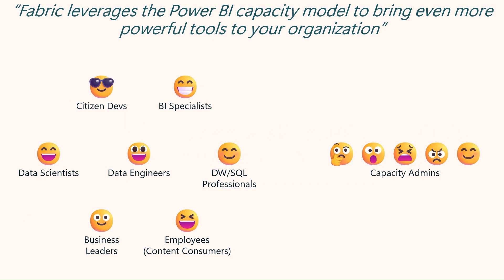Fabric is built upon the capacity model that came along with Power BI, so capacity admins familiar with that will find this nothing new. However, with Fabric there's a whole lot more things that people can do. While this makes a lot of people in the organization very happy — leveraging their existing Power BI, now Fabric capacity — capacity admins can have mixed emotions about that. The vast majority of capacities have no issue and are properly sized, but those where throttling starts to become an issue can have some of those emotions.